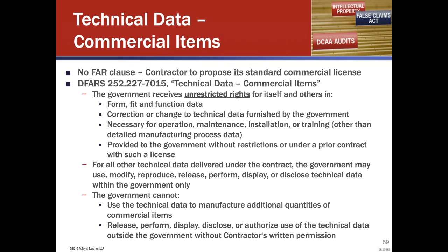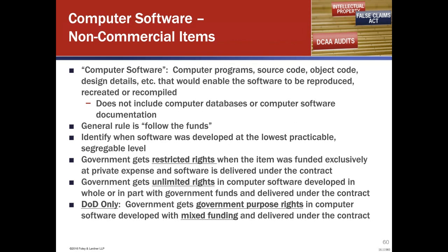Moving on to computer software for non-commercial items — the same standard applies as with technical data: it's a follow-the-funds test. Computer software is defined as computer programs, source code, object code, design details, anything that would enable the software to be reproduced, recreated, or recompiled. It does not include computer databases or computer software documentation — we're trying to distinguish what falls within technical data versus computer software. Importantly, what these concepts are missing is hardware.